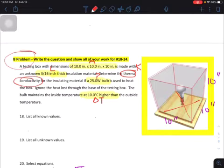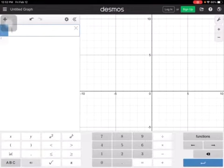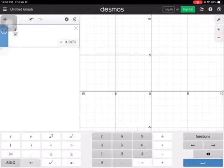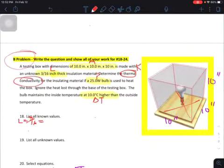It says list all of your known values. So we know that the thickness is 3/16ths of an inch, and we're going to change that to a decimal right away. 3 divided by 16 is 0.1875.